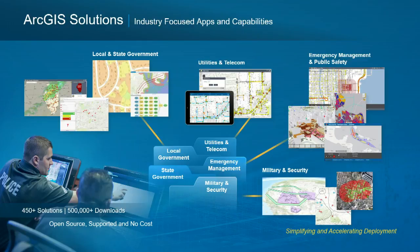One thing that we've done at ESRI is stand up what we call solutions. Solutions take those apps and configure them to deal with a particular workflow. For example, we recently put out solutions for agricultural pest surveys — the apps are configured to do all the surveys and inspections for agricultural pests, the real-time monitoring of that information, situational awareness if a pest is detected, and then reporting to the NAPIS database through USDA. We've also got solutions for crowdsourcing and citizen science relating to the Invasive Species Initiative.